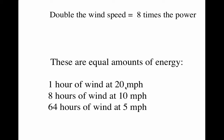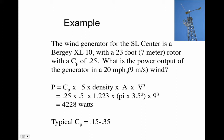Let's do a calculation with the wind generator for the SL center — it's a Berge XL 10. It has a 23-foot diameter rotor, that's 7 meters, and a coefficient of performance of 0.25. What is the power output of the generator in a 20 mile per hour, 9 meters per second wind? The coefficient of performance can never be above 0.6 — that's called the Betz limit. Large wind turbines might have a coefficient of performance of 0.4.